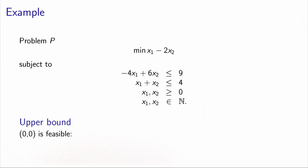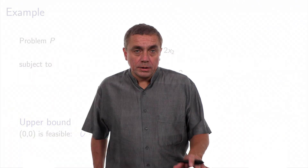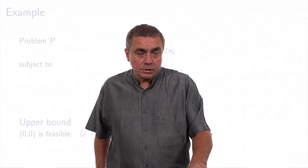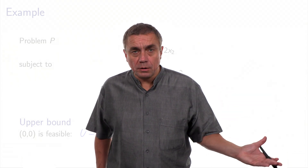We can calculate an upper bound on the optimal value of this problem by selecting one feasible solution and calculating its value. In this case, (0,0) happens to be feasible, so the upper bound can be set to zero. Note that if it is not possible to find a feasible solution easily, we can always set the upper bound to plus infinity at the beginning of the algorithm.